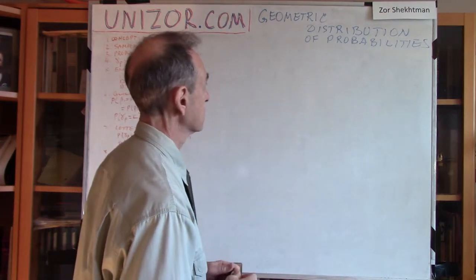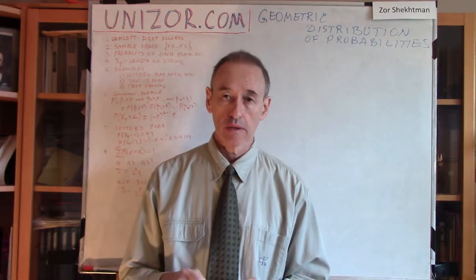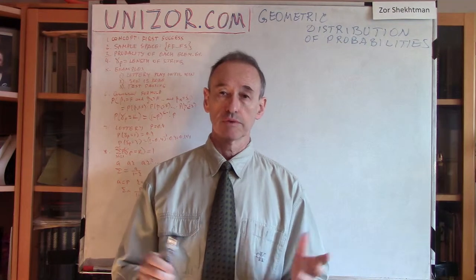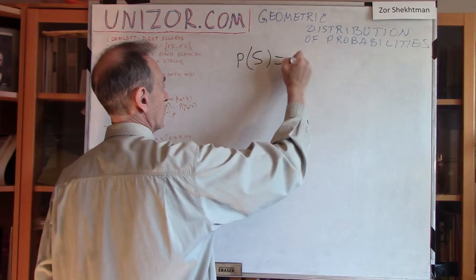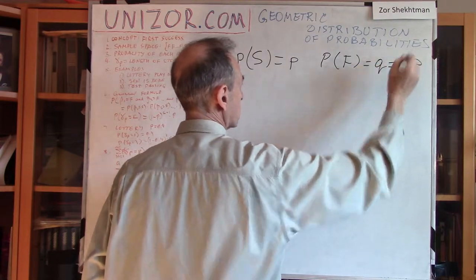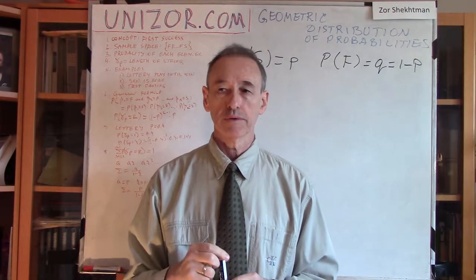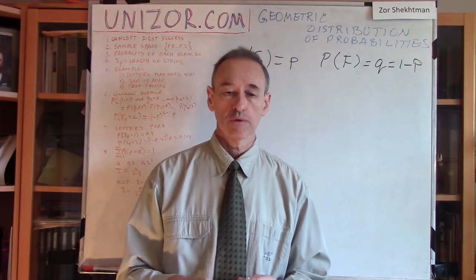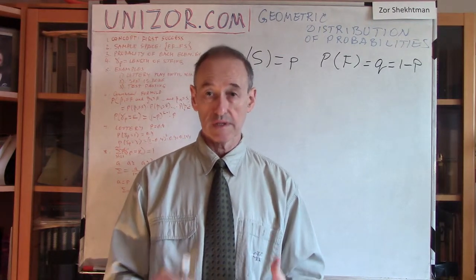Alright, back to geometric distribution of probabilities. We did discuss Bernoulli trials many times. These are random experiments that have only two different results: success and failure. The probability of success was P, and the probability of failure was Q, which equals 1 minus P.